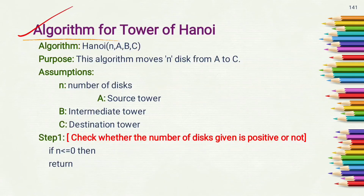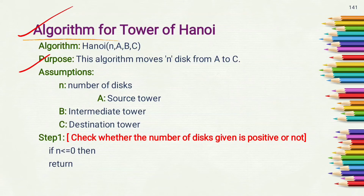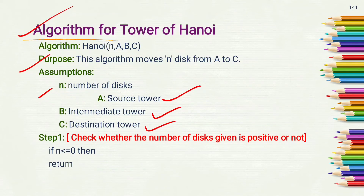Now let's see the algorithm for Tower of Hanoi. The name of the algorithm is Hanoi and it takes four parameters: n, A, B, and C. The purpose of this algorithm is to move N disks from A to C. Here, n is the number of disks, A is the source tower, B is the intermediate tower, and C is the destination tower.